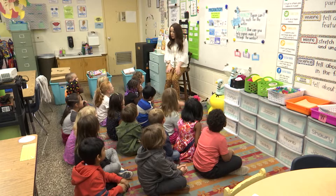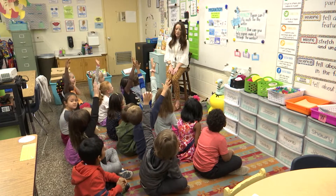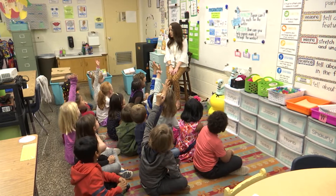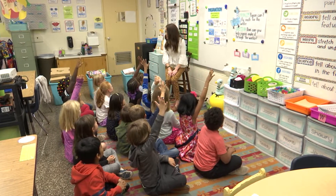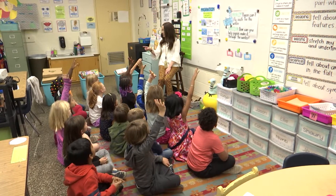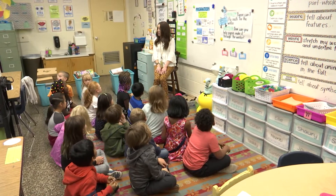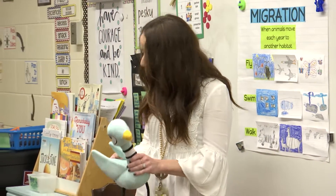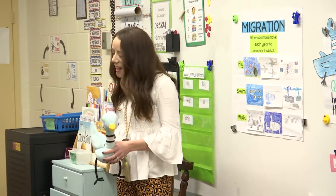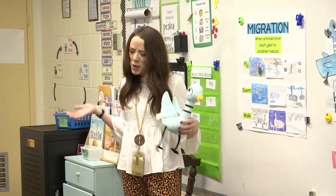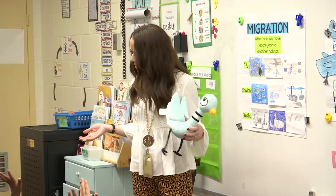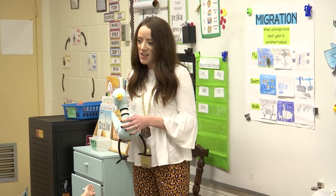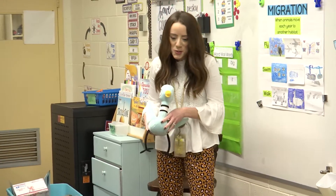What kind of animals migrate? Harper — birds. Birds migrate. How do birds migrate? How do birds move? Joyce — by flying. By flying. So our favorite bird has a problem. We've been talking all about how birds can migrate and they migrate south for the winter. Why do birds fly south for the winter? Holly — so they don't get cold, because they're going to a warmer place.